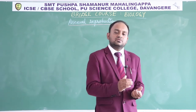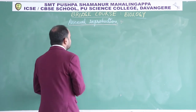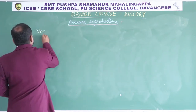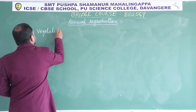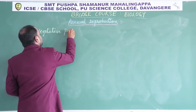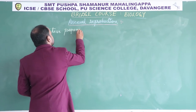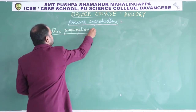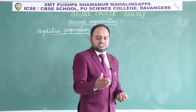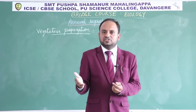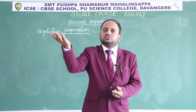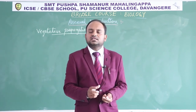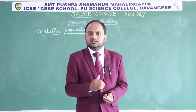Such kind of propagation, where the detached or cut part of the plant develops into a new individual, is called vegetative propagation. The unit involved is called a vegetative propagule. So the next type of asexual reproduction is vegetative propagation, where a cut piece of a plant is detached, introduced into the soil, and develops into a new individual plant.